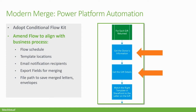When you adopt the flow kit, you are then able to modify or amend that flow. Our example schedules the acknowledgement letters to automatically merge at 11 PM; you may determine that the merge needs to happen the next business day at 8 AM. You're defining the template locations pointing to your SharePoint or cloud-based environment, defining which staff members need to be aware of the acknowledgement merge letter completion, or if there were no letters to be merged at all.